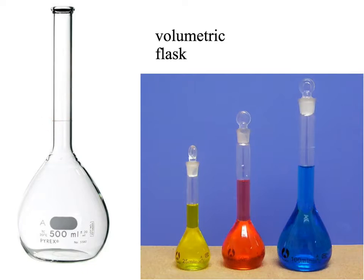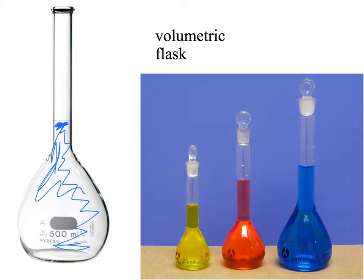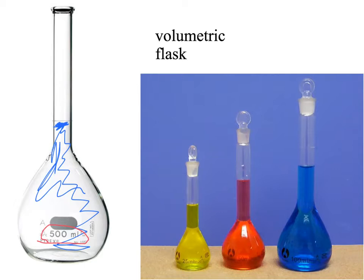If I fill this flask all the way to that line exactly, I would know that I have exactly 500 milliliters of solution in that volumetric flask, because these are calibrated to a very high precision — two decimal places — so I would know that I have 500.00 milliliters. Other sizes hold exactly 25.00, 50.00, or 100.00 milliliters. The function of a volumetric flask is to hold a precise amount of liquid.